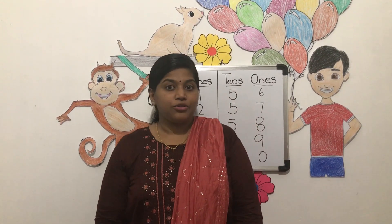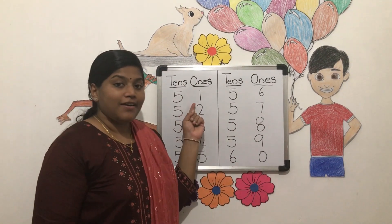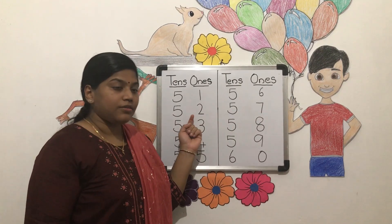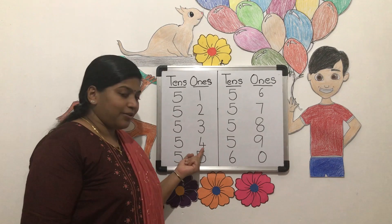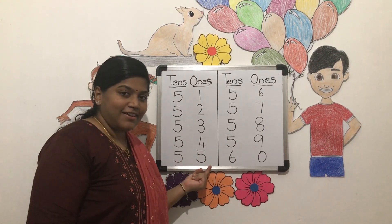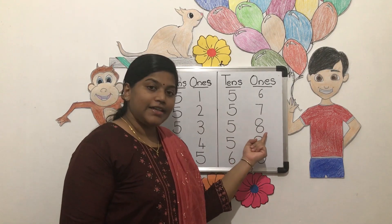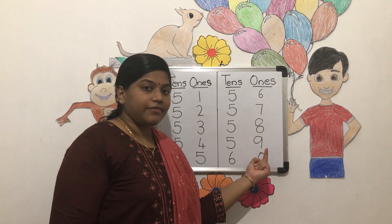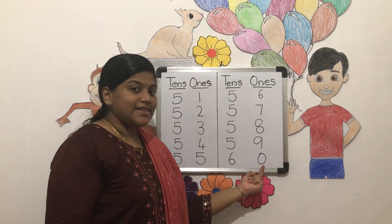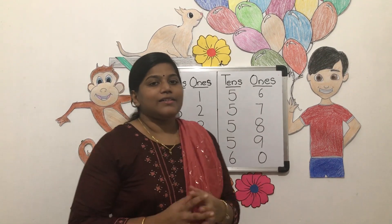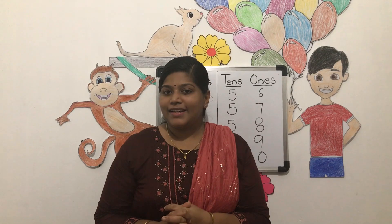Now let's count the numbers from 51 to 60 together. 5 1 — 51, 52, 5 3 — 53, 5 4 — 54, 5 5 — 55, 5 6 — 56, 5 7 — 57, 5 8 — 58, 5 9 — 59. After 59, 6 0 — 60. So children, you have understood numbers from 51 to 60. Please practice writing 51 to 60 in your slate. Now let's meet again, children. Bye bye.